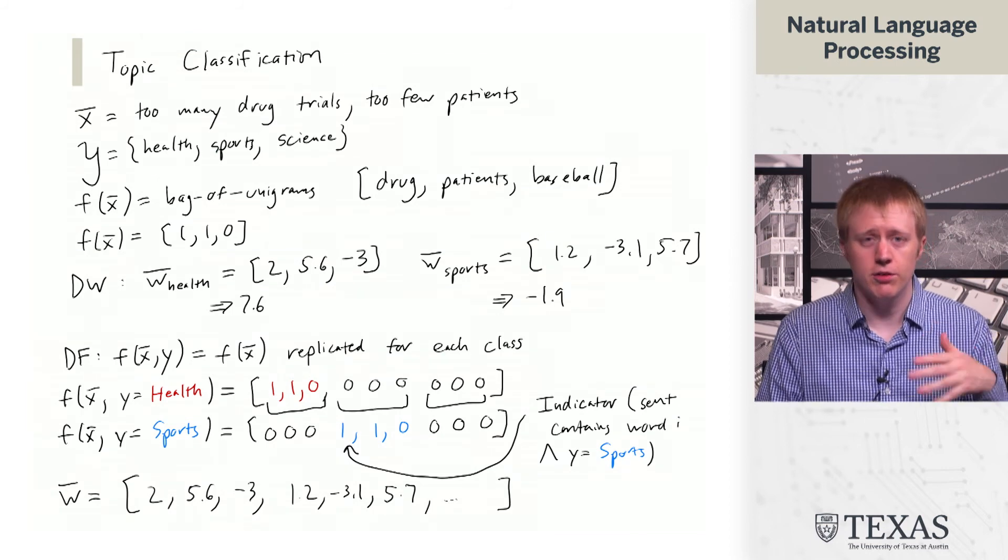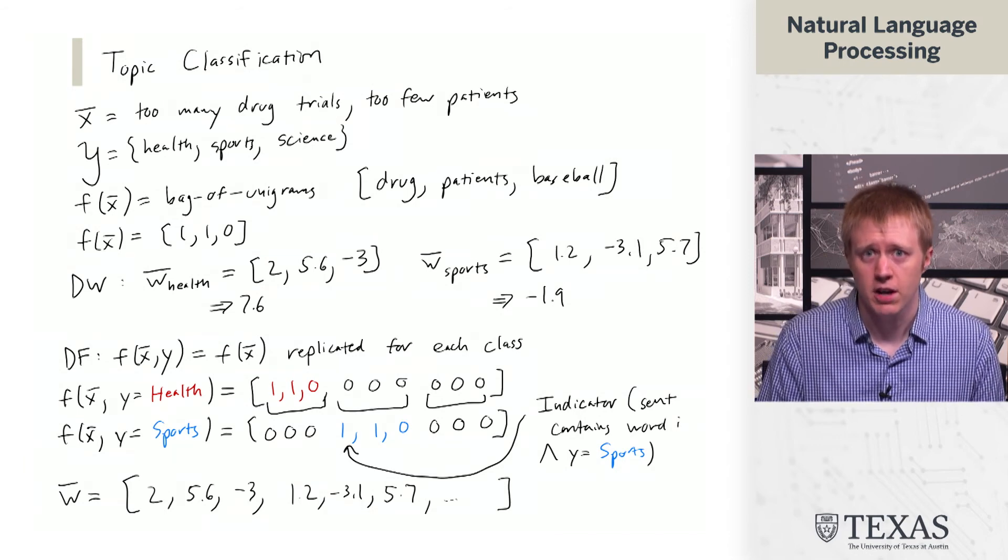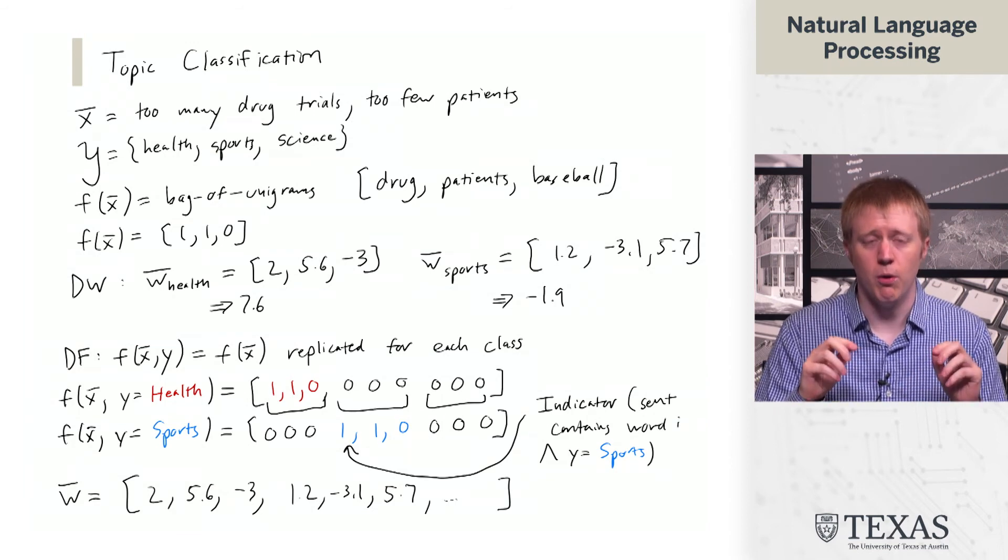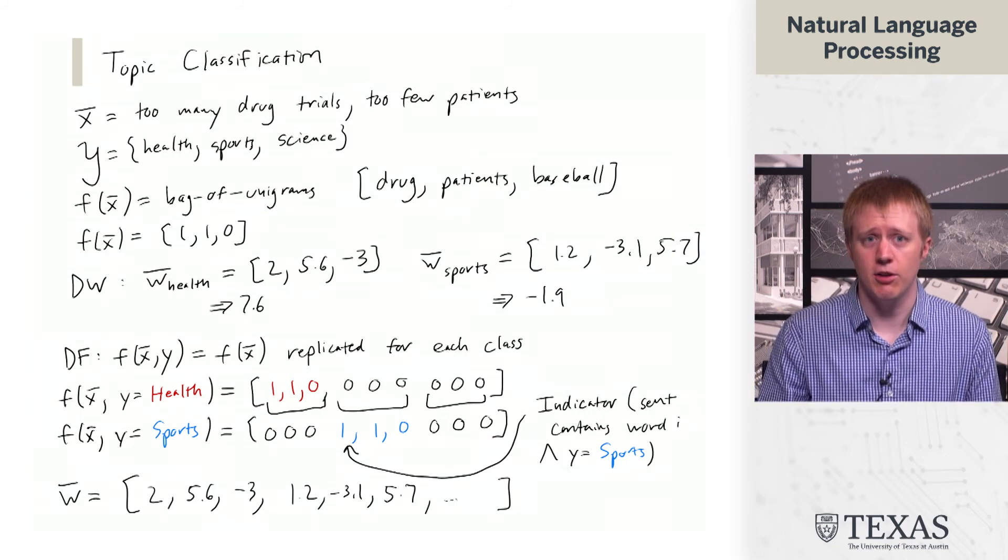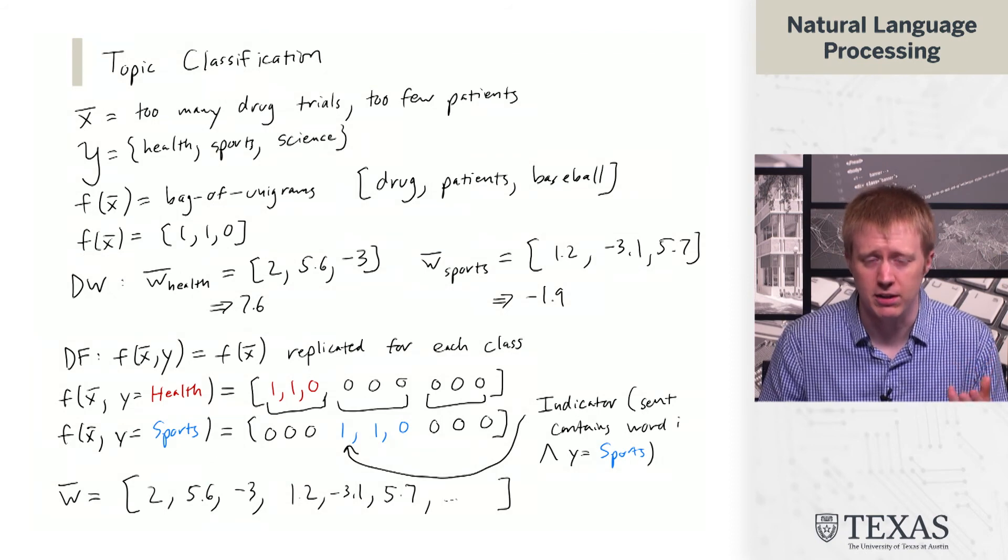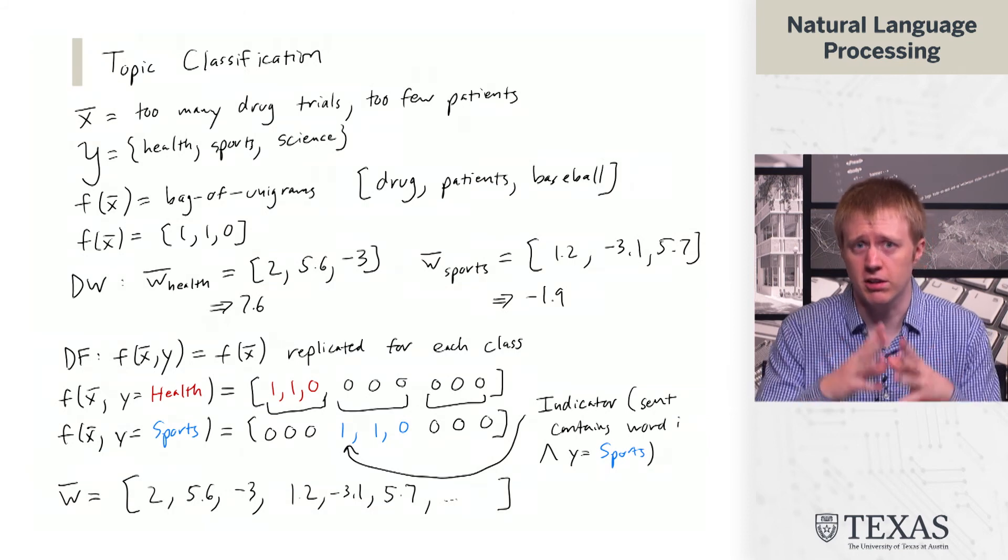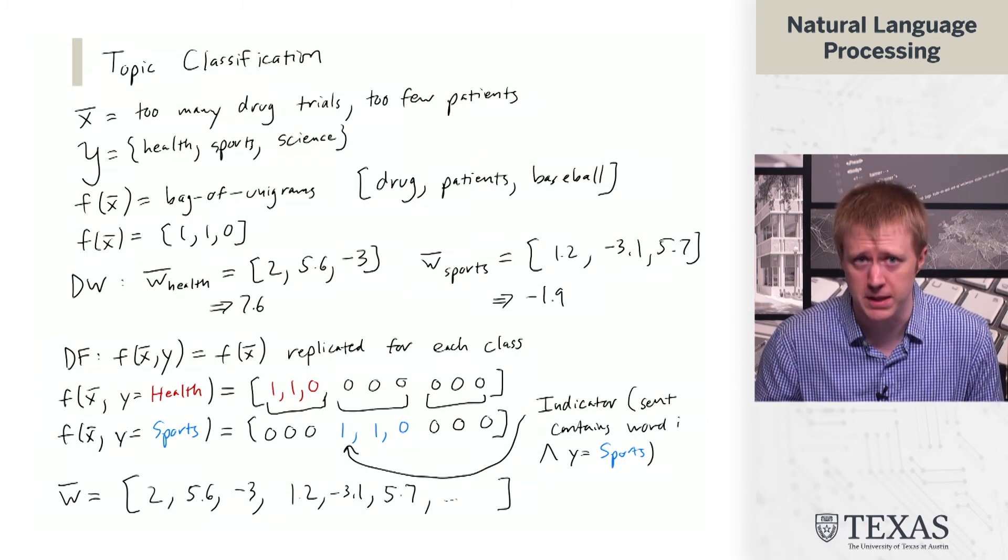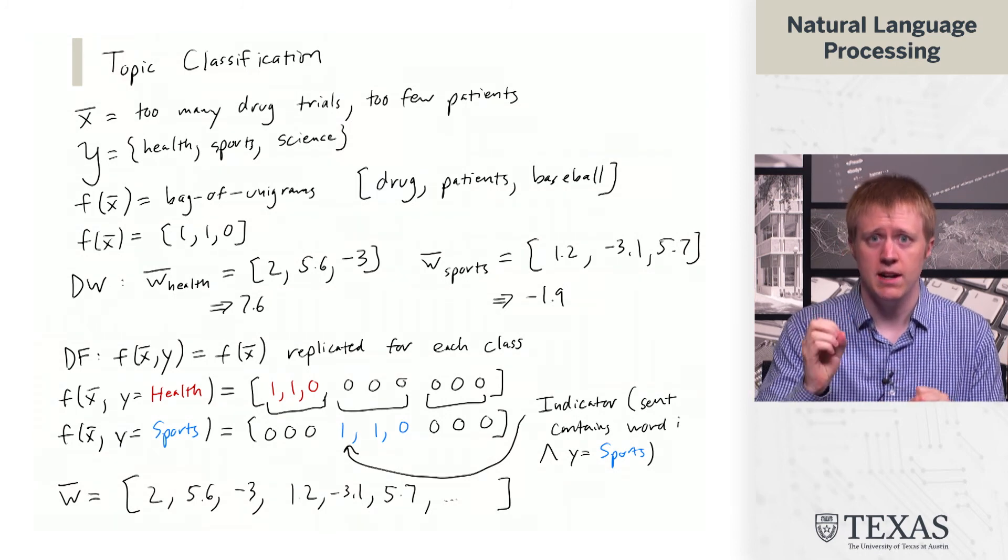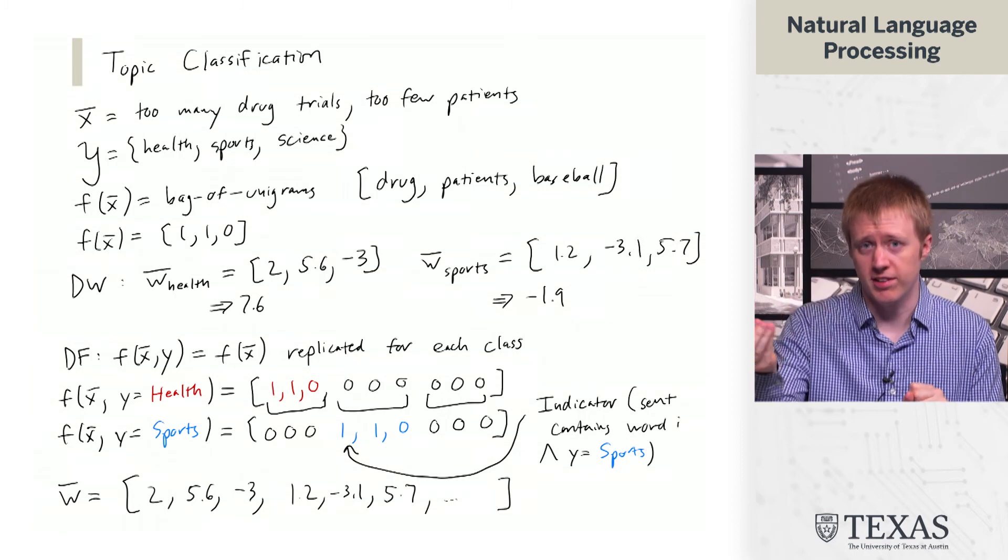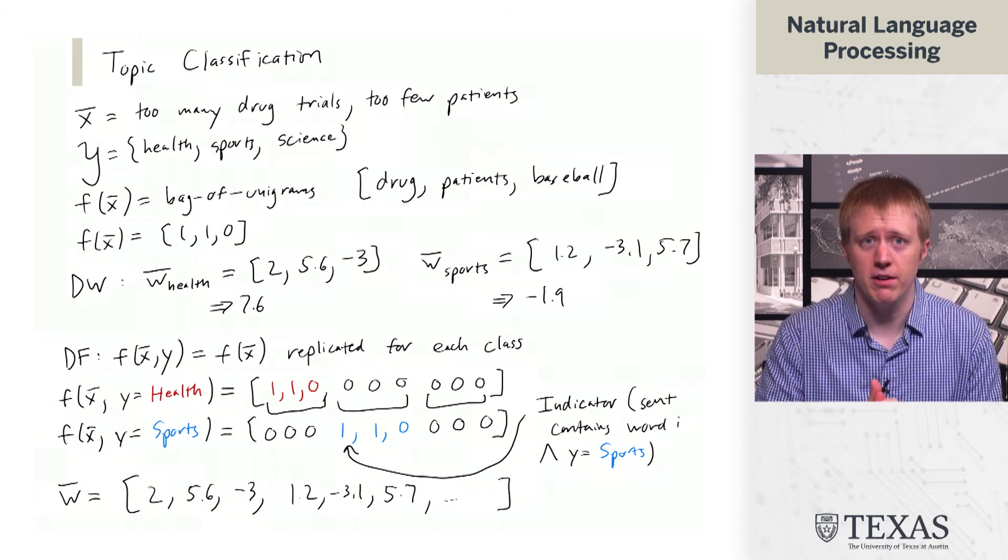The reason I'm belaboring this point about how these things behave as indicators is that when we get into structured classification, we're going to see that we're going to think about y's that are more complicated. They're like set part of speech tags at each point in a sentence or something like that. There it's not going to be practical to think about having one set of weights per different class we're classifying, because our classes are going to be these large structured objects like sequences of parts of speech. We're going to have to think about these more complicated feature structures that conjoin properties of the input, like what words does the sentence contain, with properties of the output, like what label are we using here. For now though, you could think about either of these things as equivalent.